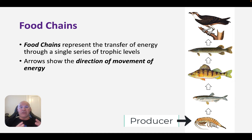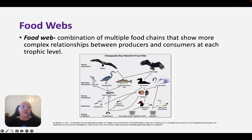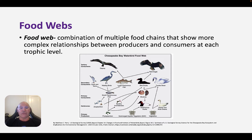One way to represent the transfer of energy through an ecosystem is through a food chain, which shows a single series of energy transfers through the trophic levels. Importantly, the arrows go in the direction of energy flow — the way the energy flows through the ecosystem. We also have food webs, which are more complex because they combine multiple food chains to show the more complex relationships between producers and consumers.